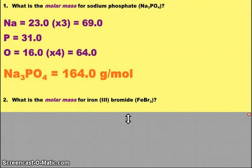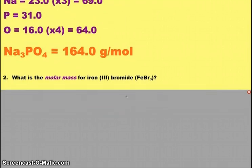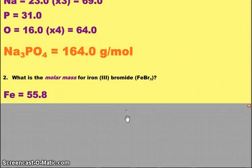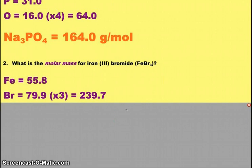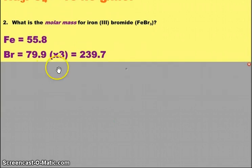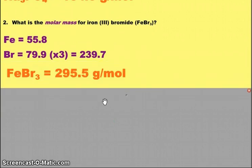So the next question is for iron (III) bromide. That 3, the Roman numeral, it's just a way that we name compounds, and we'll get into that next unit. But that means that we've got one iron and three bromines. So iron, 55.8. Although if you are using the little tiny periodic table I gave you, 55.9 is acceptable. Bromine, 79.9. There are three of them. And so when we add those two numbers together, we get the grand total of 295.5 grams per mole.